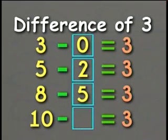The last number sentence, 10 minus what number equals 3? Very good. 10 minus 7 equals 3.